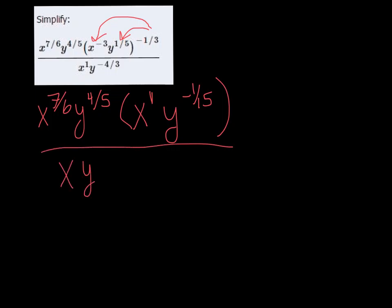x to the one is just x, and then we have y. On the bottom, we have x times y to the negative four-thirds.